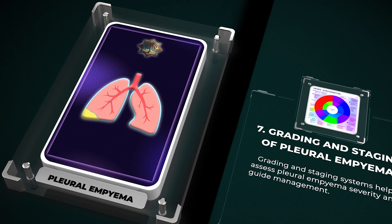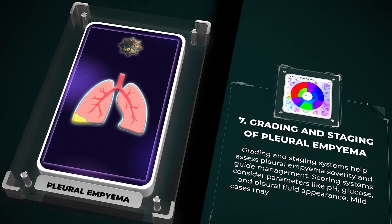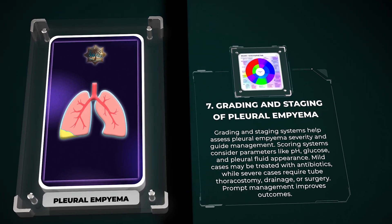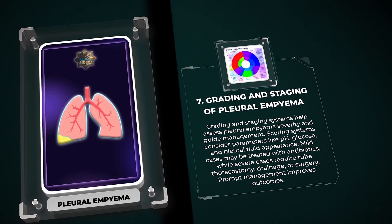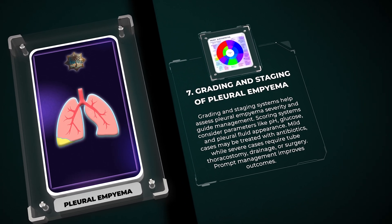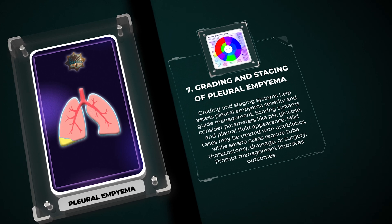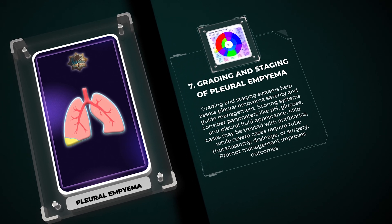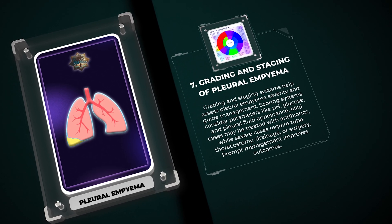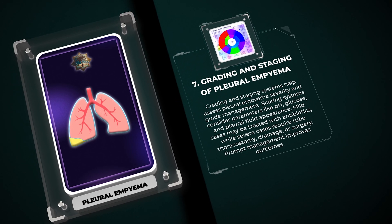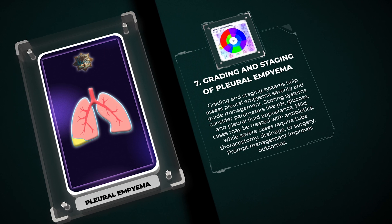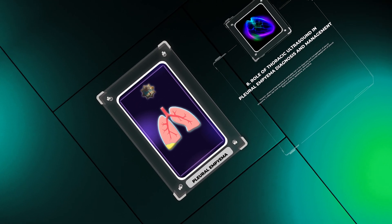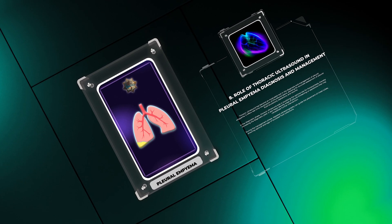Grading and staging systems help assess pleural empyema severity and guide management. Scoring systems consider parameters like pH, glucose, and pleural fluid appearance. Mild cases may be treated with antibiotics, while severe cases require tube thoracostomy drainage or surgery. Prompt management improves outcomes.